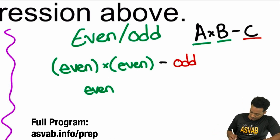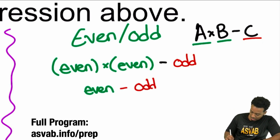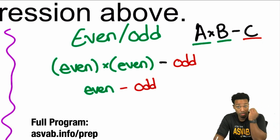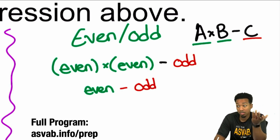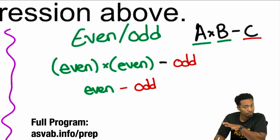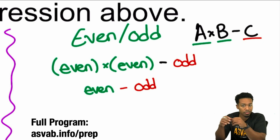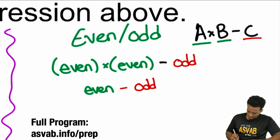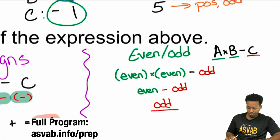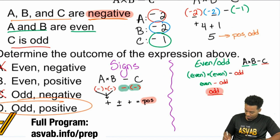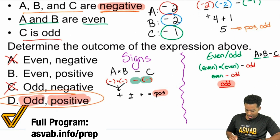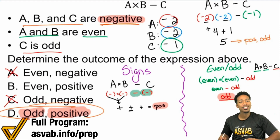Now, if we have an even minus an odd, how is that going to affect everything? Think about it: four minus one is three — odd. Ten minus three is seven — odd. Fourteen minus five is nine — odd. You can use examples, or you can know the rules: even plus even is even, odd plus odd is even, even plus odd is odd. You can interchange plus and minus — either way, even minus odd gives you odd. So with that, we have positive odd. That reinforces the answer that we have.